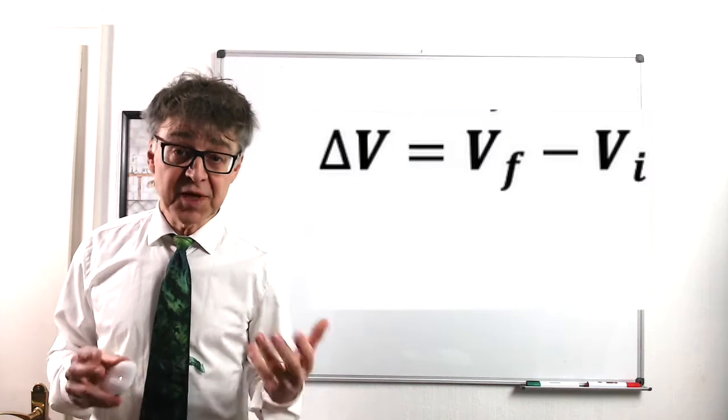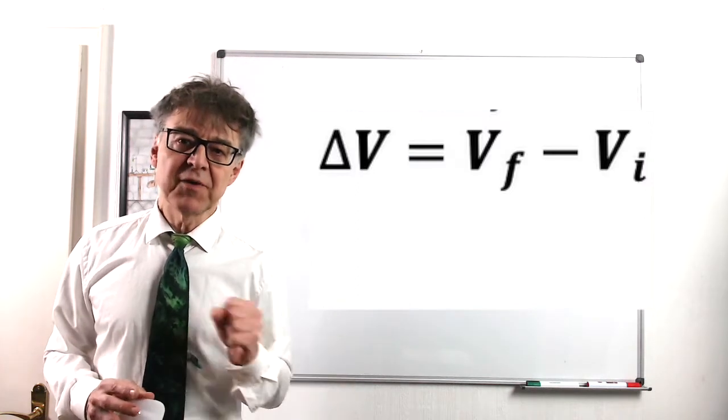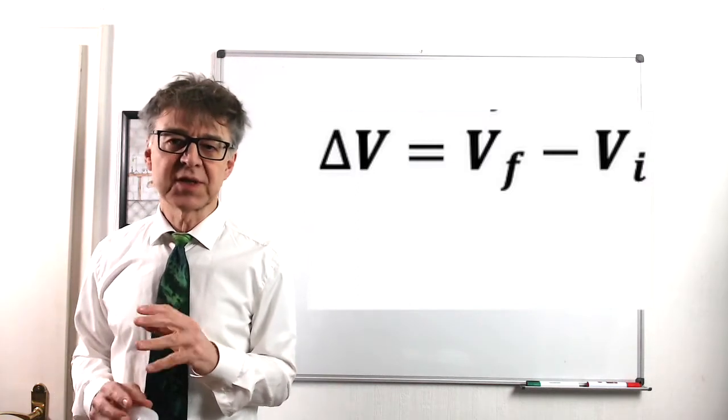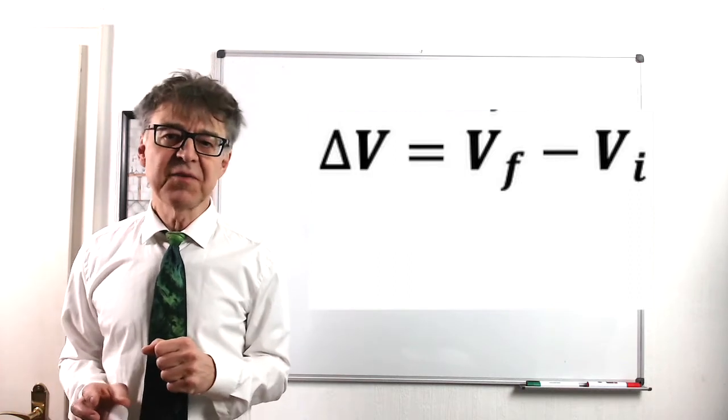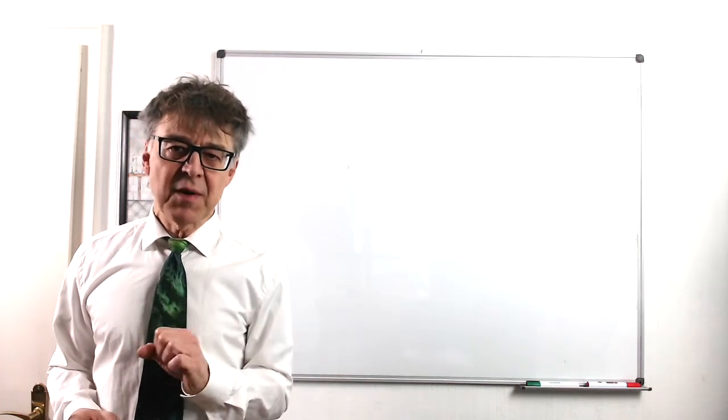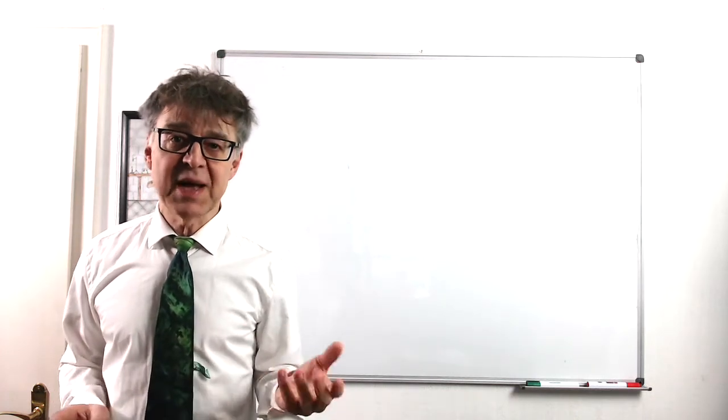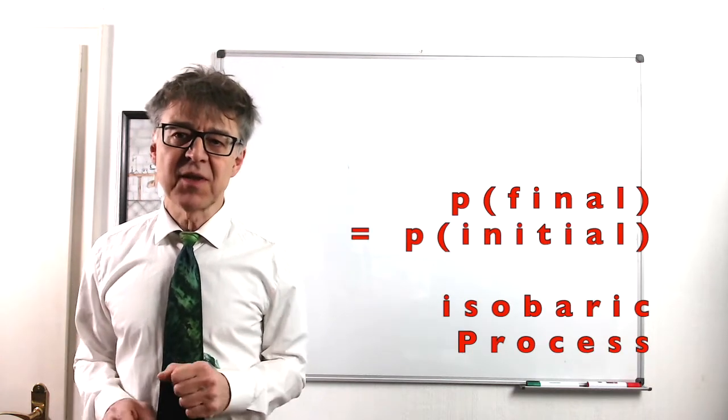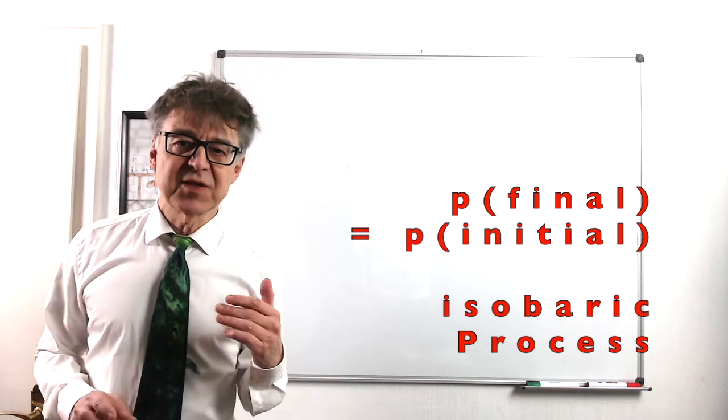It is defined as Z sub-final minus Z sub-initial. For example, delta V equals V final minus V initial, or delta T equals T final minus T initial. Of course, the state variable can also be constant. For example, if the pressure remains constant, then we have a so-called isobaric process.